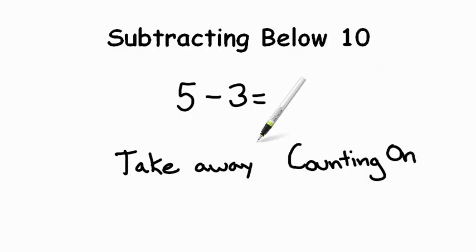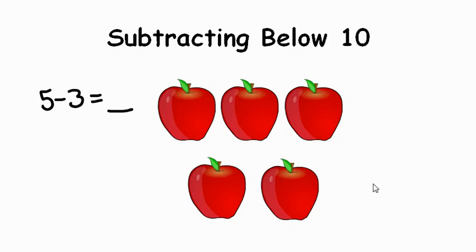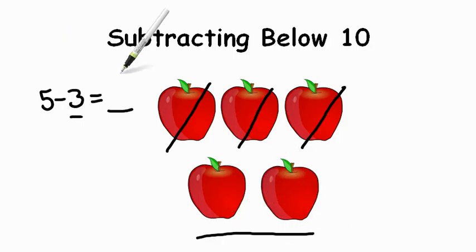Now first we're going to look at the strategy take away. With the take away strategy, you're removing the smaller number. The smaller number between these two is 3. So here we have 5 apples and we're going to remove 3: 1 is gone, 2 is gone, 3 is gone. So our difference, what is left over, is 1, 2. So our answer is 2.